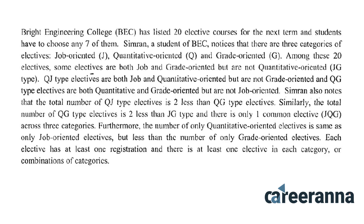A caselet is given to us. Bright Engineering College (BEC) has listed 20 elective courses for the next term and students have to choose any seven of them. Simran, a student of BEC, notices that there are three categories of electives: job oriented (J), quantitative oriented (Q), and grade oriented (G).